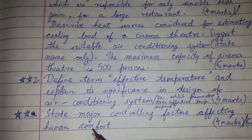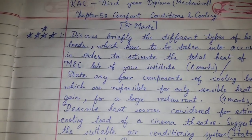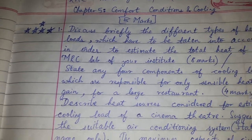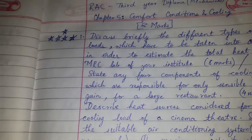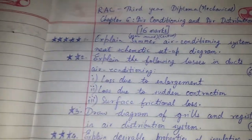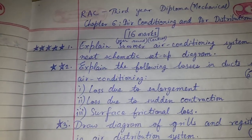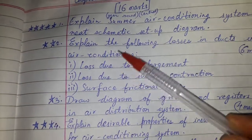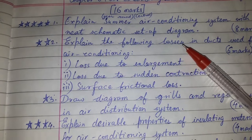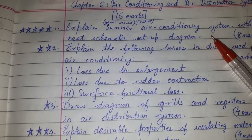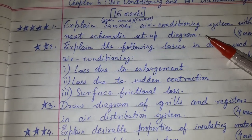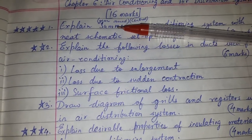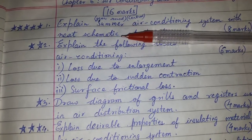These are the questions from chapter number five — comfort conditions and cooling. Now chapter number six: air conditioning and air distribution, which is for sixteen marks. Questions with more stars have been asked several times, so they are more likely and more important. Question number one: explain the summer air conditioning system with a neat schematic setup diagram.